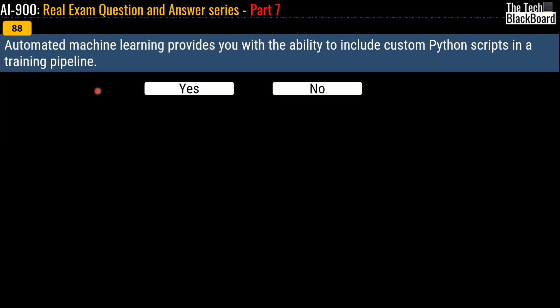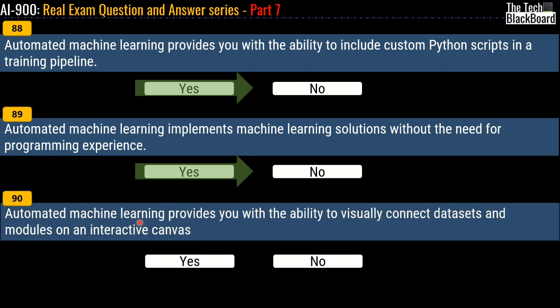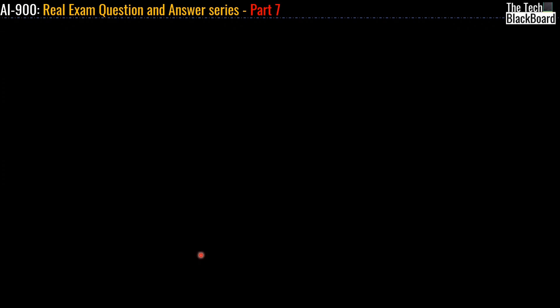Question 88: automated machine learning provides you with the ability to include custom Python scripts in a training pipeline — yes or no? The correct answer is Yes. Question 89: automated machine learning implements machine learning solutions without the need for programming experience — the correct answer is Yes. Question 90: automated machine learning provides you with the ability to visually connect datasets and modules on an interactive canvas — the correct answer is Yes.